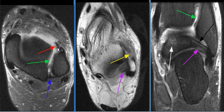There is edema and hemorrhage in the syndesmosis, extending superiorly. The posterior syndesmotic ligament is intact, as seen on this image with the blue arrow.